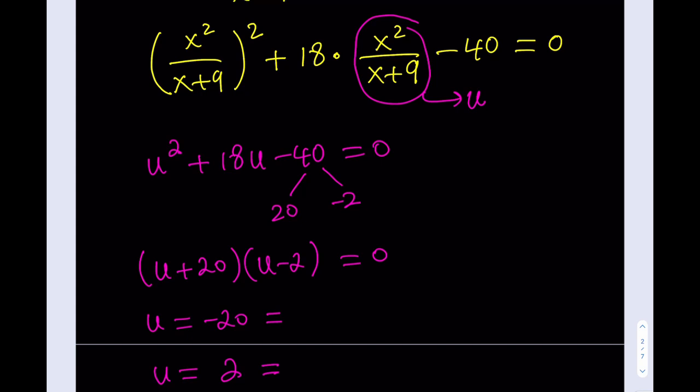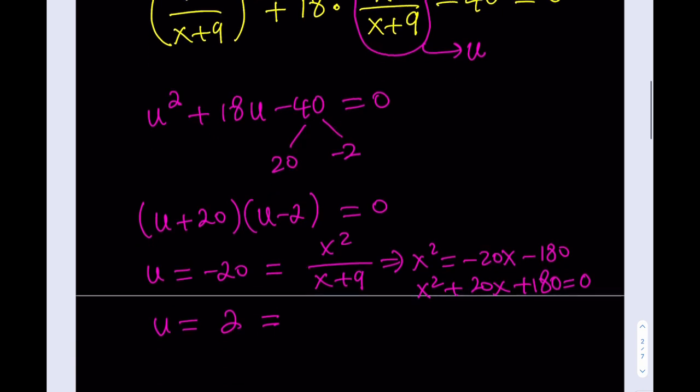But what is u? u is x squared over x plus 9. Now, we get a quadratic here. So let's go ahead and cross multiply. x squared is equal to negative 20x minus 180. And then if I bring everything to the left-hand side, then I should be getting x squared plus 20x plus 180 equals 0. So this is kind of interesting because what happens is this doesn't have any real solutions. How do we know that? Well, you can check the discriminant. Half of 20 is 10. If I square it, I get 100. So by adding 100 to both sides, I can actually make it a perfect square, but the right-hand side is going to stay negative. So this is why we don't have real solutions.